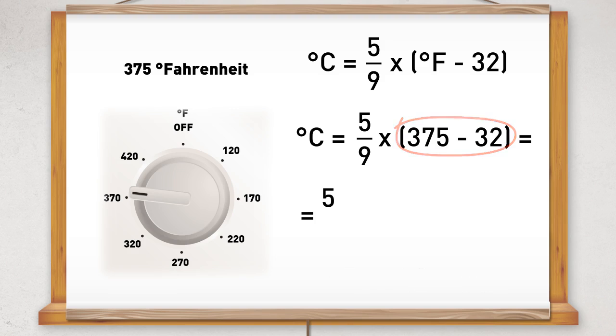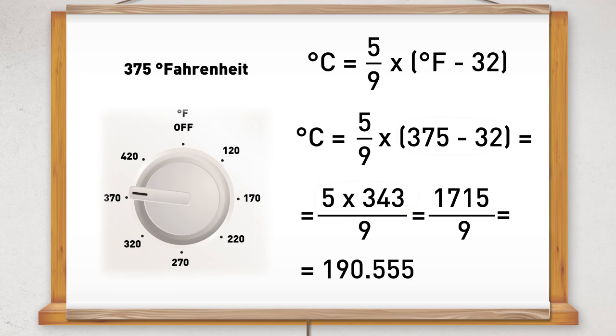Now we need to multiply this by 5 and divide by 9. So 343 times 5 is 1715. And now we divide by 9, which gives us the answer of 190.555 recurring.